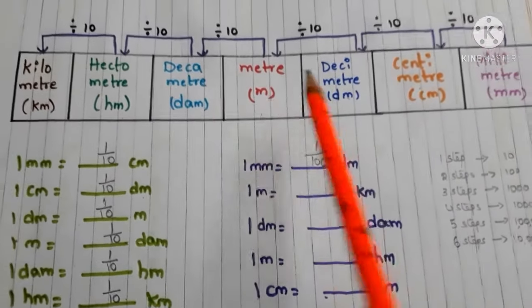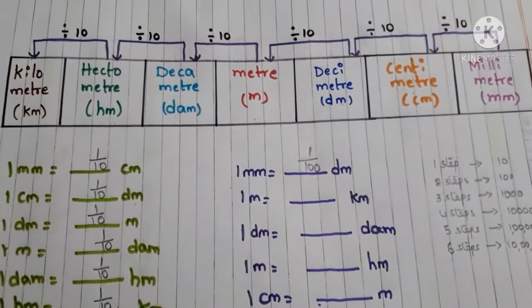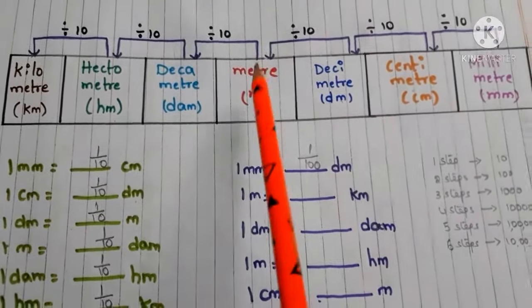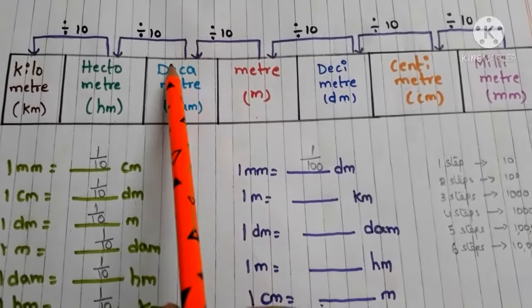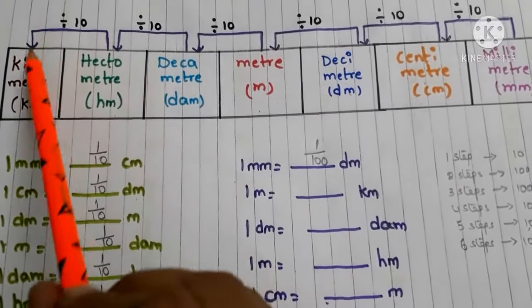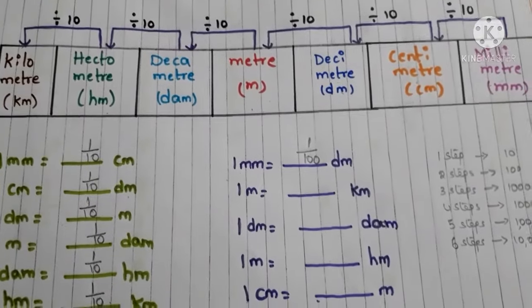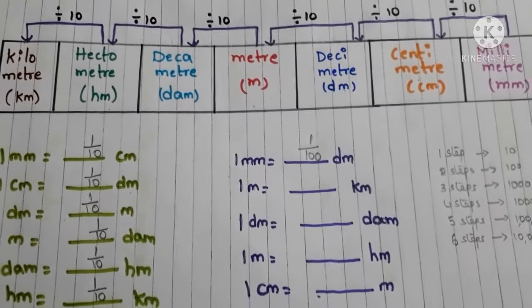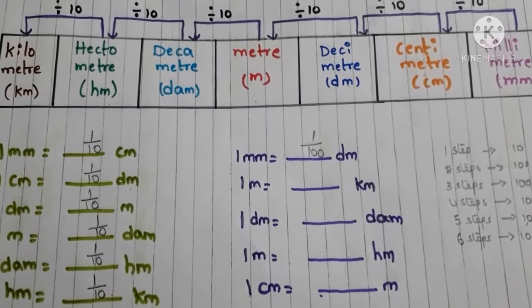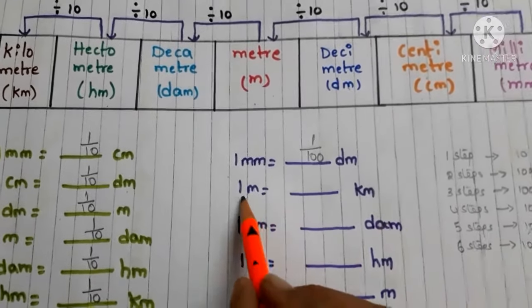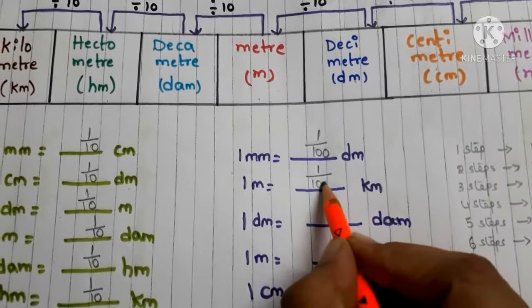Next: 1 meter equals how many kilometers? Find meter in the table, then find kilometer. Count the steps: one, two, three — three steps. So we divide by 1,000. Therefore, 1 meter equals 1/1,000 kilometers.